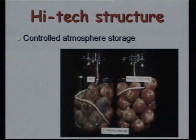One of the high-tech structures is controlled atmosphere storage. In controlled atmosphere storage, apart from maintaining temperature and humidity, we maintain the composition of two important gases — oxygen and carbon dioxide. We lower the concentration of oxygen from the normal 21 percent down to about 5 percent, and increase the concentration of carbon dioxide. By doing this, we can lower the respiration rate and extend the shelf life.